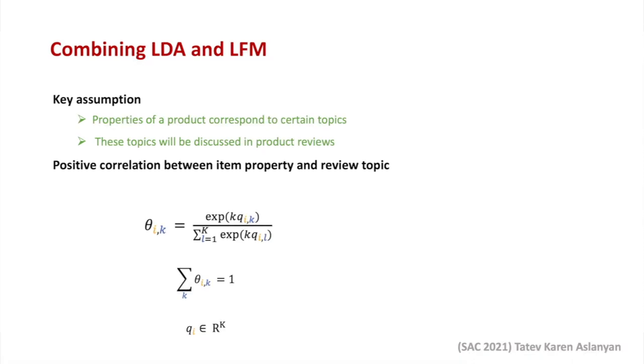Let us now discuss the third part of our methodology, where we combine the rating modeling technique LFM and the topic modeling technique LDA. The key assumption is that if a product has a certain property, then it will correspond to a certain topic, which will be discussed in the reviews of this item. So, there is a positive correlation between the item property and the review topic. But one cannot simply assume that these two are the same, because the former can take arbitrary value while the latter is a stochastic vector. So, to do this, we use the following transformation to transform the item features Q_I to topic probability, based on the fact that the original properties of both items are satisfied.